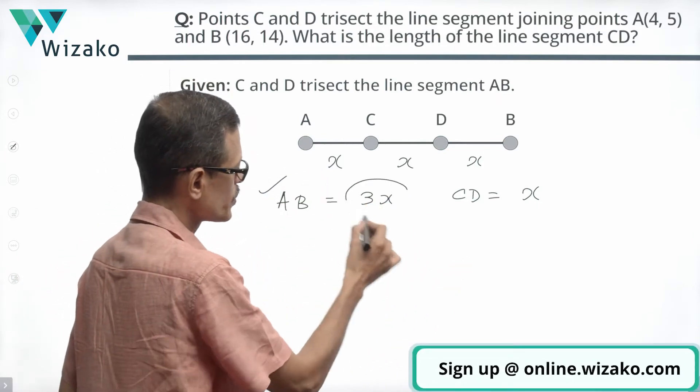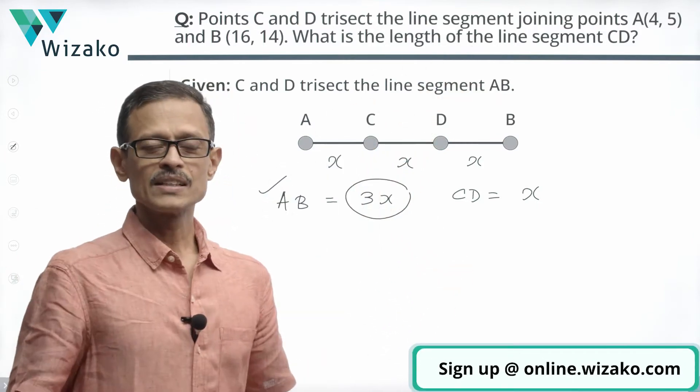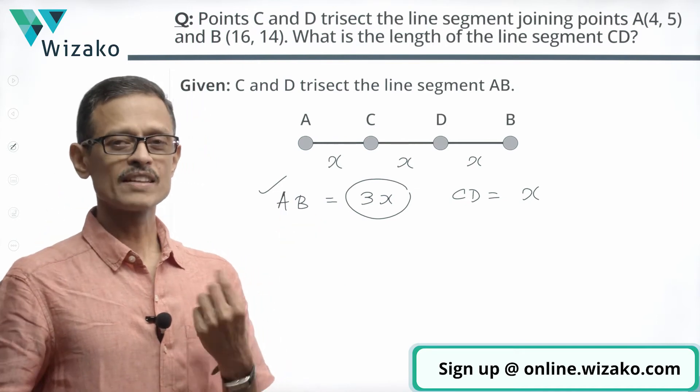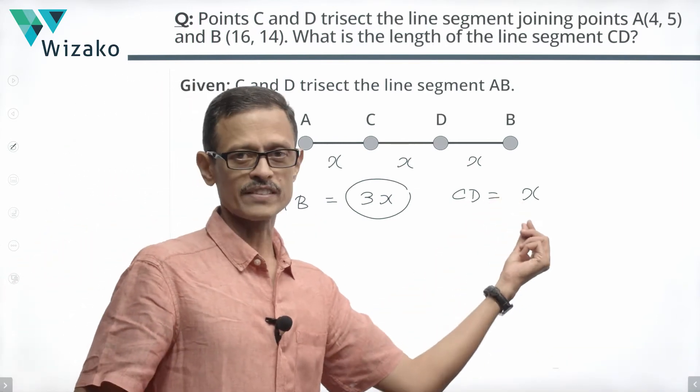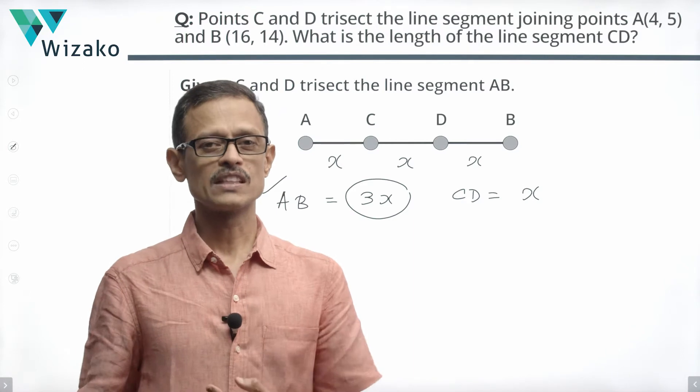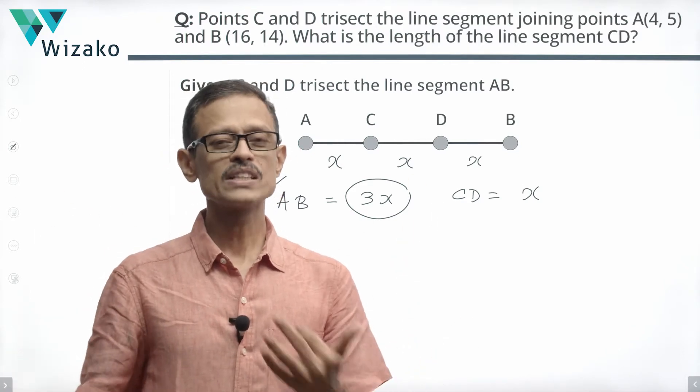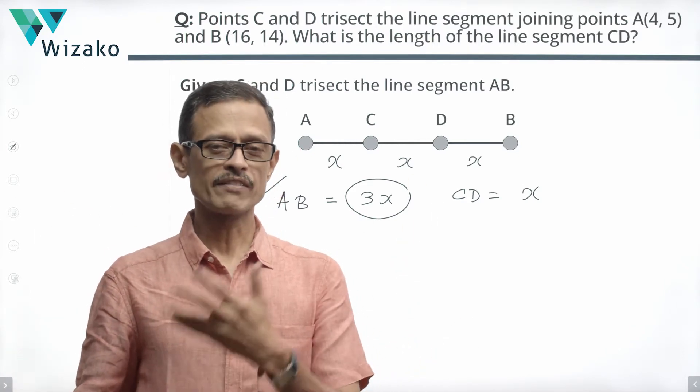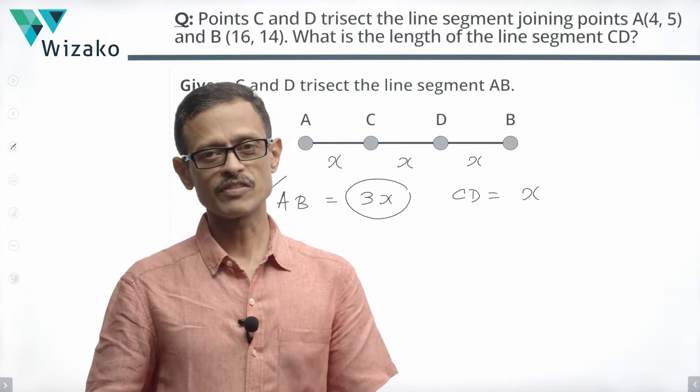So we are finding out using the information given to us the measure of 3X. The question is asking us to find out the value of X. So step 1, let's find out the length of line segment AB using the distance formula. Step 2, we will divide that value by 3 to find out the length of line segment CD.